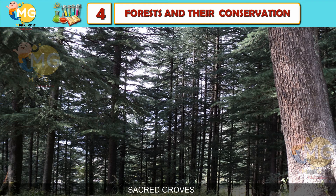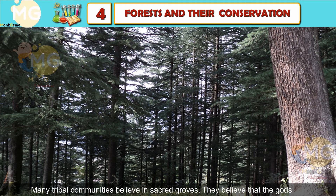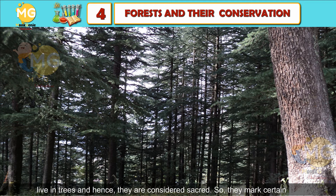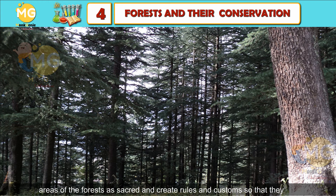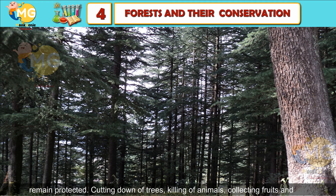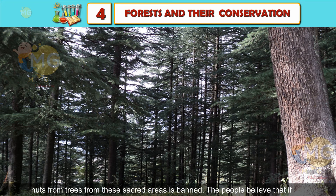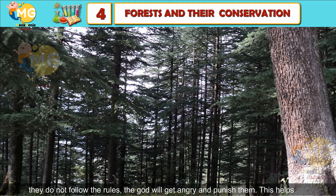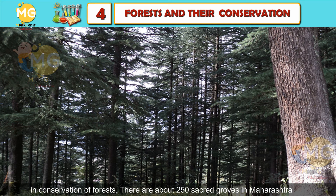Sacred groves: Many tribal communities believe in sacred groves. They believe that gods live in trees and hence they are considered sacred. To mark certain areas of the forest as sacred, they create rules and customs so that these areas remain protected — cutting down of trees, killing of animals, and collecting fruits and nuts from trees in these sacred areas is banned. The people believe that if they do not follow the rules, the god will get angry and punish them. This helps in conservation of forest.